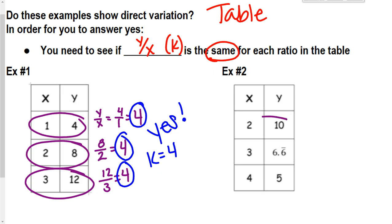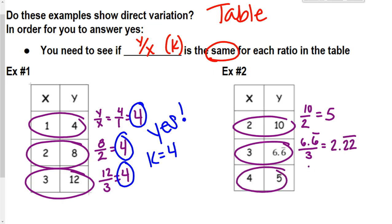When I come to example 2, well, 10 divided by 2 is 5. I look at this guy, 6.6 repeating forever over 3, that guy is actually going to be equal to 2.2 repeating forever. And then this right here, 5 over 4, that equals 1.2. So here, each one of these has a different value. So the answer is no, because I can't say what k is. I don't have a value for k, because every single one of those is different.